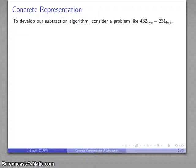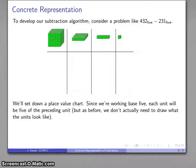Let's consider a problem like 432 base 5 minus 231 base 5. And so I can set down my place value chart. Again, I don't really need to show what the units look like, it's just a convenient visual picture there. However, the thing to remember is since we're working base 5, each unit is going to be 5 of the previous unit. So 5 of these make this, 5 of these make this, 5 of these make that, and so on.